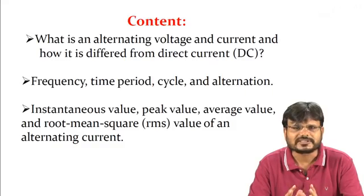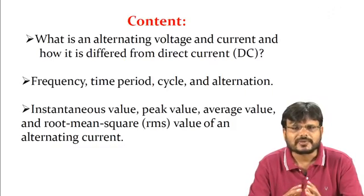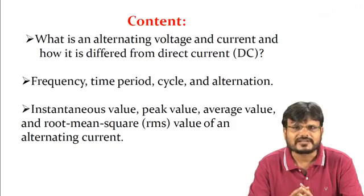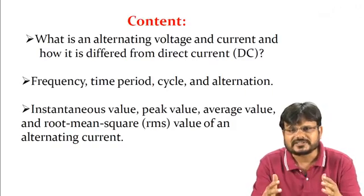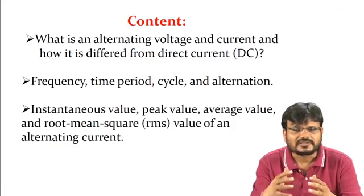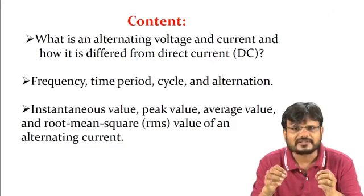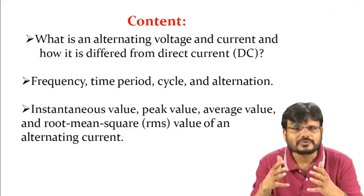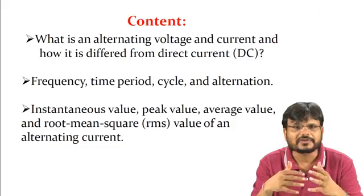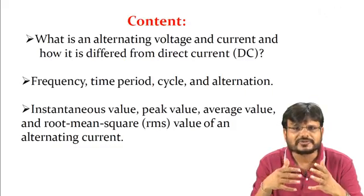In DC, the magnitude of current or voltage is always constant with respect to time. But in AC, the magnitude of the voltage changes with respect to time. For example, in a single-phase AC supply at 50 Hz, at ωt = 0 the voltage is 0, and at ωt = π/2 the voltage is maximum — that is called the peak value.